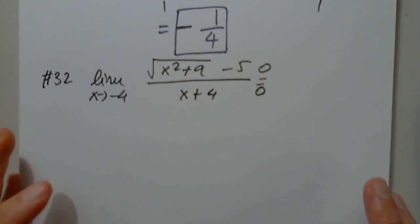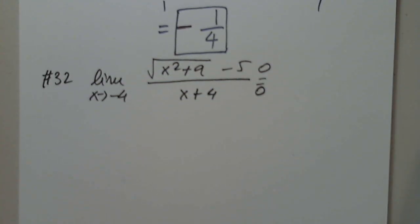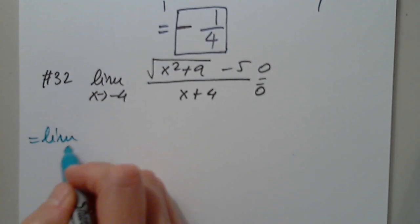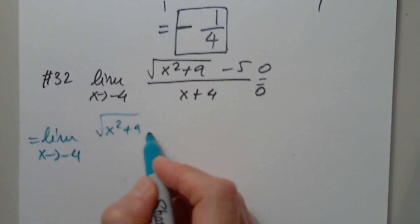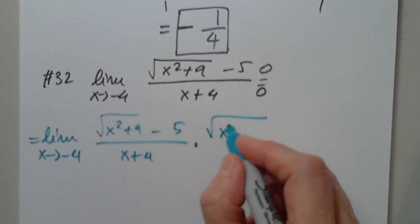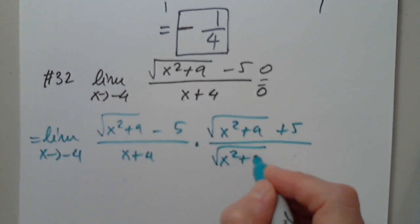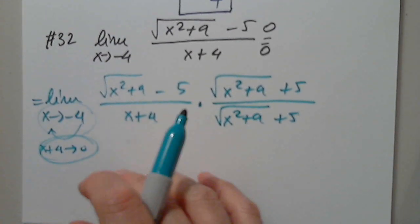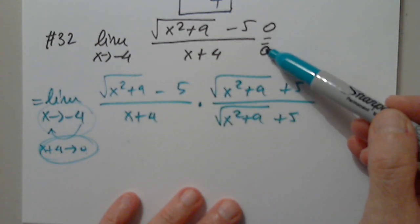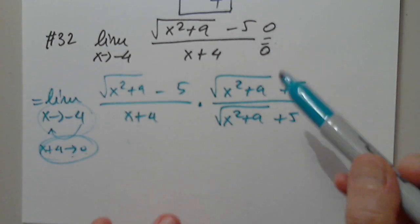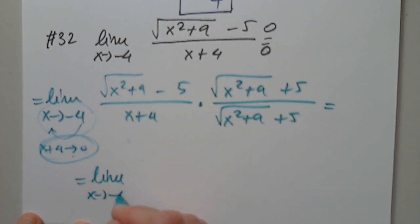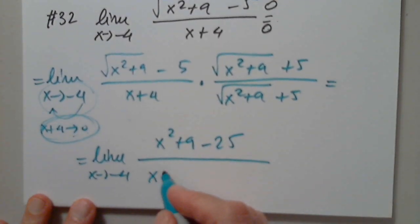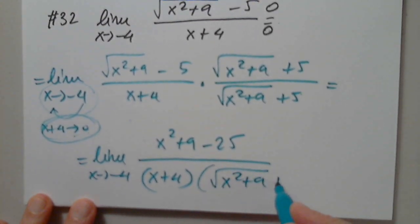Can anyone tell us what to do here? I started by multiplying by the conjugate quantity. Since I wrote that over there, I can continue. So limit as x approaches negative 4 of the square root of x squared plus 9 minus 5, over x plus 4, times the square root of x squared plus 9 plus 5, over the square root of x squared plus 9 plus 5. The x plus 4 is the problem — if this is supposed to have a limit, the x plus 4 has to cancel from top and bottom. So the numerator becomes x squared plus 9 minus 25.